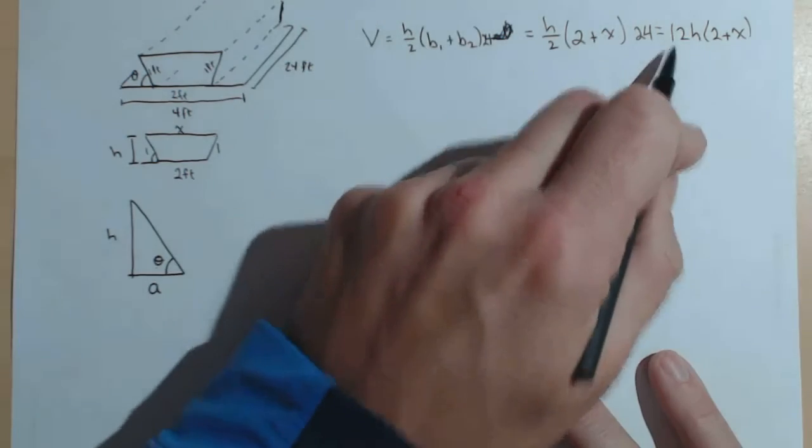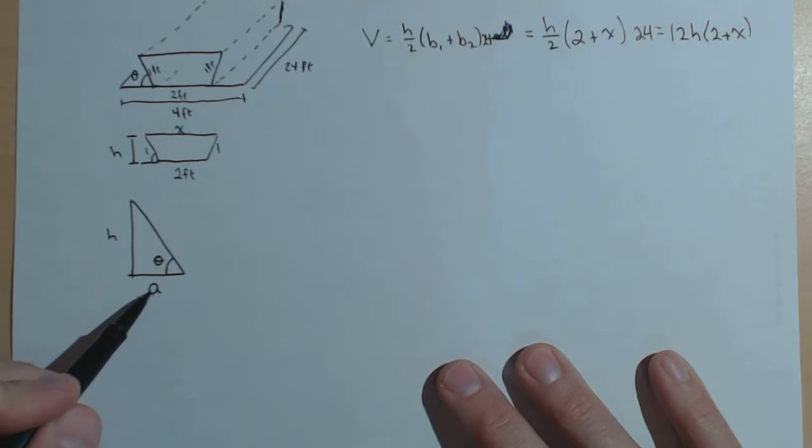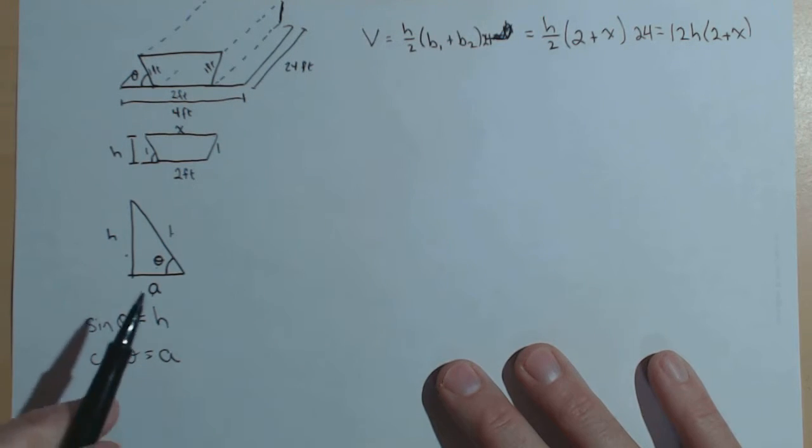h, obviously, it's in our volume. A isn't, but we'll see how we can make it work. So first off, h is the opposite side. So sine of theta equals h over 1. So sine of theta equals h over 1, or just h. That works out very nice. And cosine of theta, very similarly, equals a over 1, or just a.